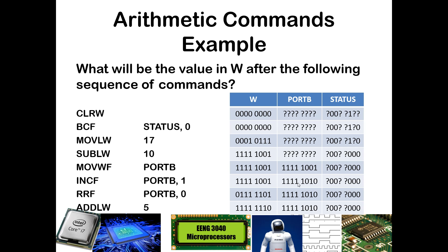Now we're going to rotate right what was in port B and put the results into the W register. We take the value in port B and rotate things through — this 0 comes from the status register's C bit, and everything else has been shifted to the right. The former bit 0 has been rotated through, and since we already had a 0 in the C bit, that just remains. Then we add a literal 5 to W, so W has 5 added to it. The result is not 0 and we didn't have a carry, so those bits remain 0.